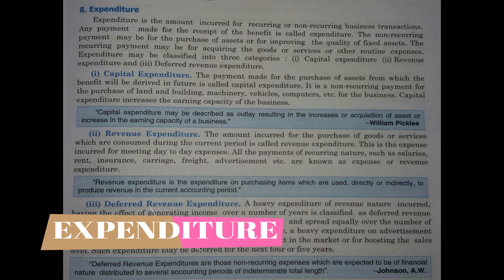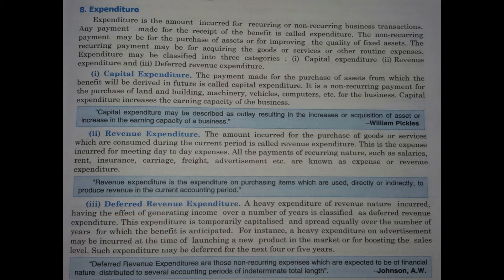Expenditure means expense. There are three main types of expenditure in business: capital expenditure, revenue expenditure, and deferred revenue expenditure. Capital expenditure refers to occasional major spending in business — such as purchasing land and building, machinery, vehicles, or computers. Capital expenditure may be described as outlay resulting in the increase or acquisition of assets; it increases the value of assets and the earning capacity of the business. Revenue expenditure refers to recurring expenses incurred day-to-day within a year — the amount incurred for purchase of goods or services consumed during the current period.